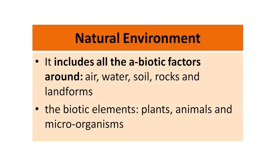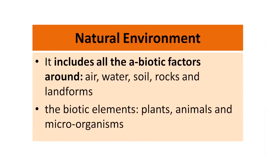It is both biotic and abiotic components of the environment — that is, both living and non-living things around us. The natural environment includes all the abiotic factors: air, water, soil, rocks and landforms. Natural environment also has biotic elements — plants, animals and microorganisms — and there is an interdependence among all these biotic elements. They all require air, water, soil and other nutrients for their growth. So all components of natural environment are dependent on each other.